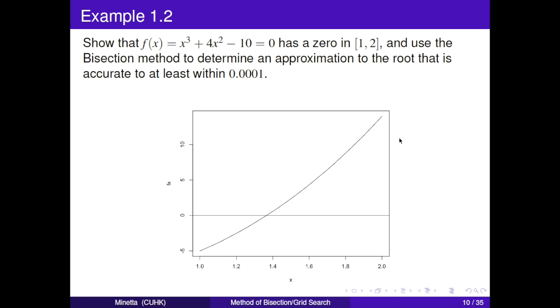Here is the second example. Show that f(x) equals 0 has a zero in interval [1, 2]. And use the bisection method to determine approximation to the root that is accurate to at least within 10 to the power negative 4.